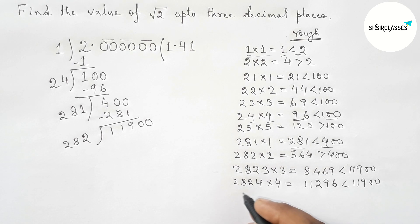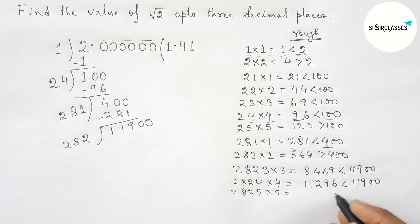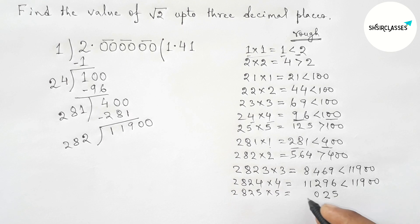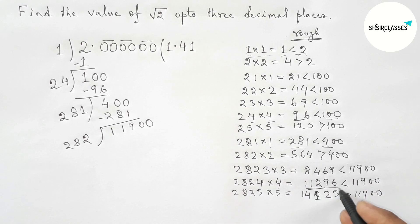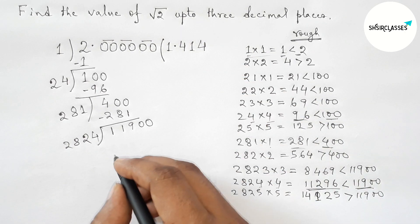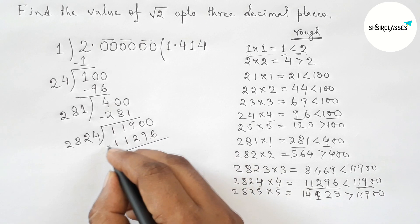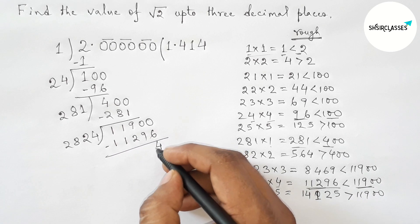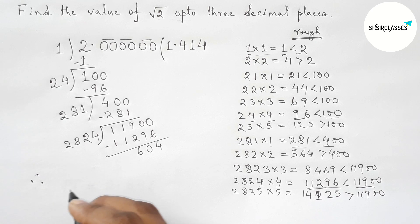Taking 5: 2825×5=14125, which is greater than 11900. So 2824×4=11296 is the closest without exceeding. We choose 4 and put it in the quotient. Subtracting: 11900 minus 11296 equals 604. We have found three decimal places, so we stop here.